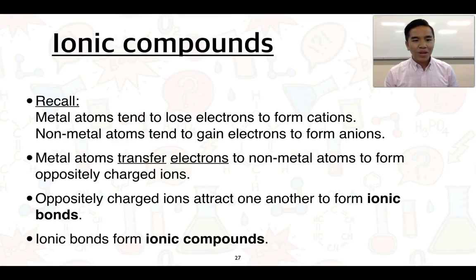To recall, metal atoms tend to lose electrons to form cations, non-metal atoms tend to gain electrons to form anions. So what's happening is we're getting a transfer of electrons from the metal to the non-metal to form these oppositely charged ions, and these attract one another due to opposite charges. These are what we refer to as ionic bonds.